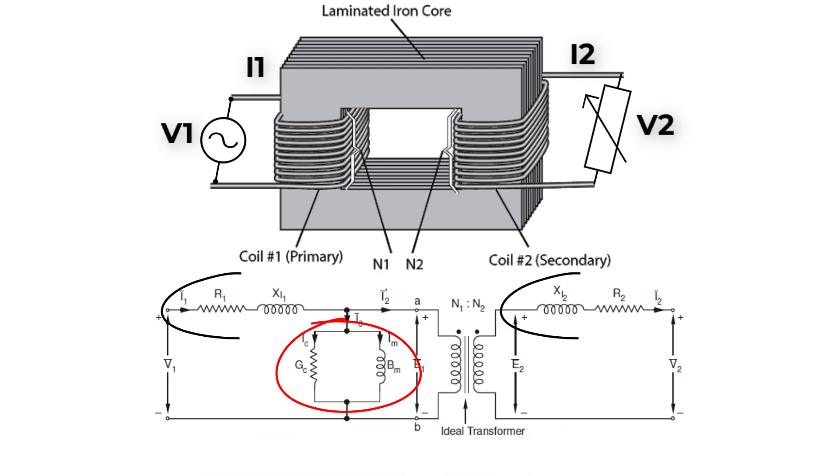Second type is copper loss, which is equal to I squared R. Here, R is the winding resistance, and I is the current flowing through the two windings. The winding resistance is constant. So, the copper loss depends on current.